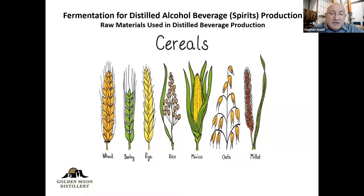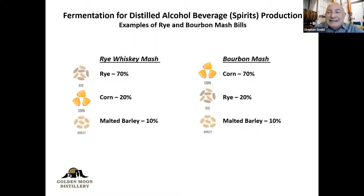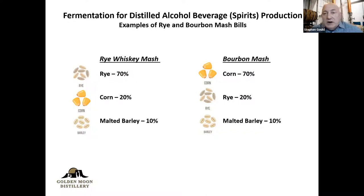Now we're going to talk about cereals. A typical rye mash whiskey — as you can see on the left, this is a very simple mash — most rye whiskeys historically are made with between 50 and 80% rye, a little bit of corn, and then malted barley. In contrast, bourbon's going to have that flipped. There are as many different variations of percentages as you can think of. A lot of books on bourbon and rye will say there's only three or four, but if you look back historically, every distiller has their own take on this.